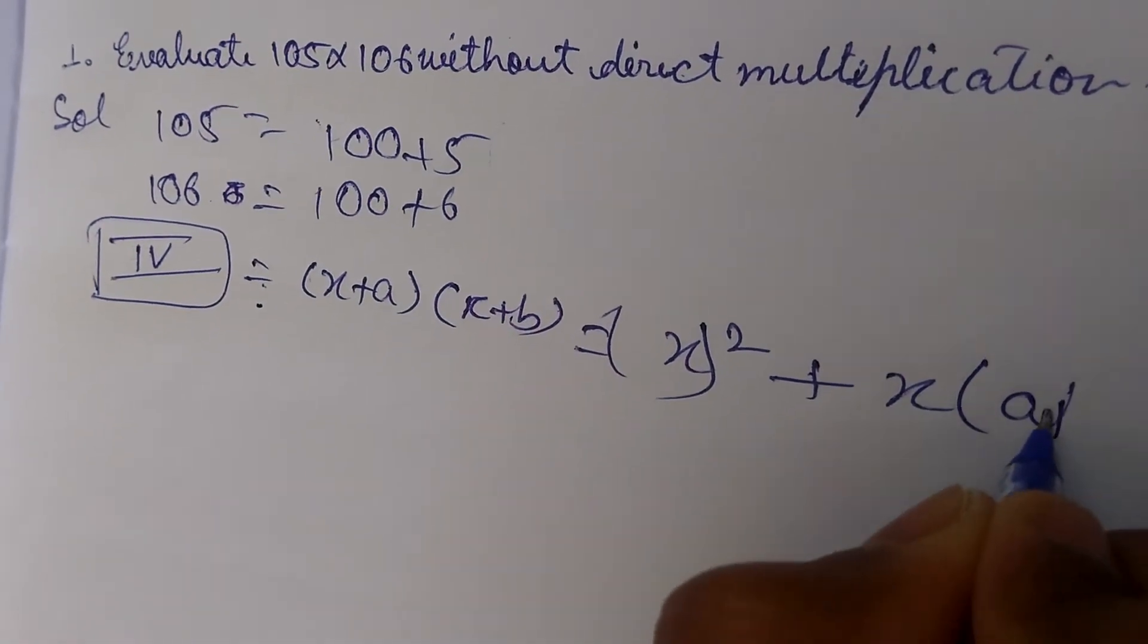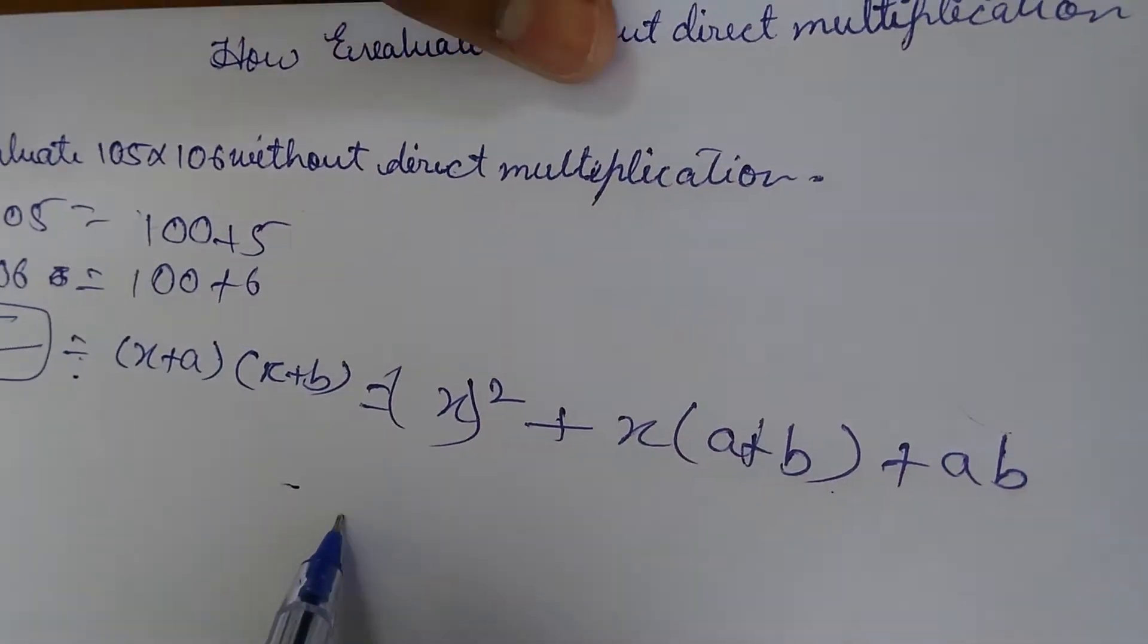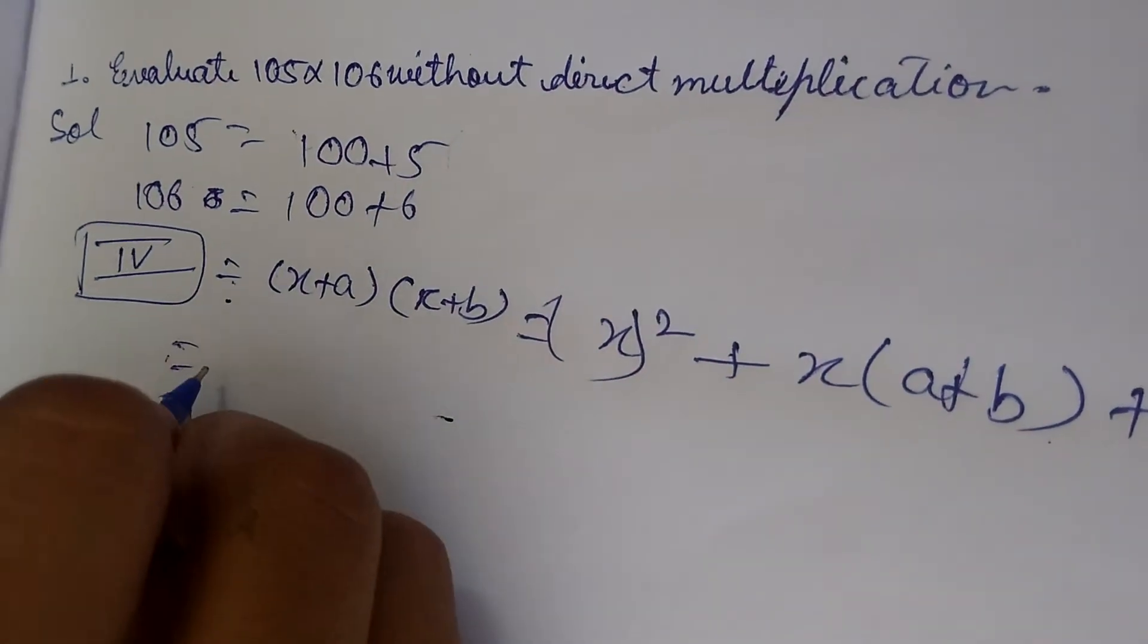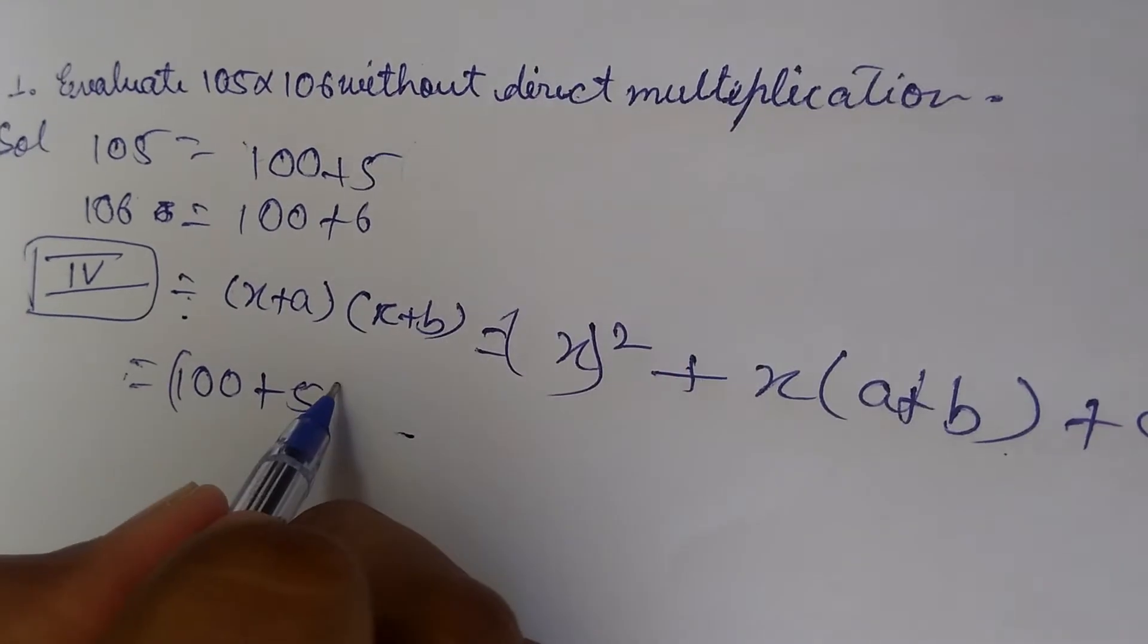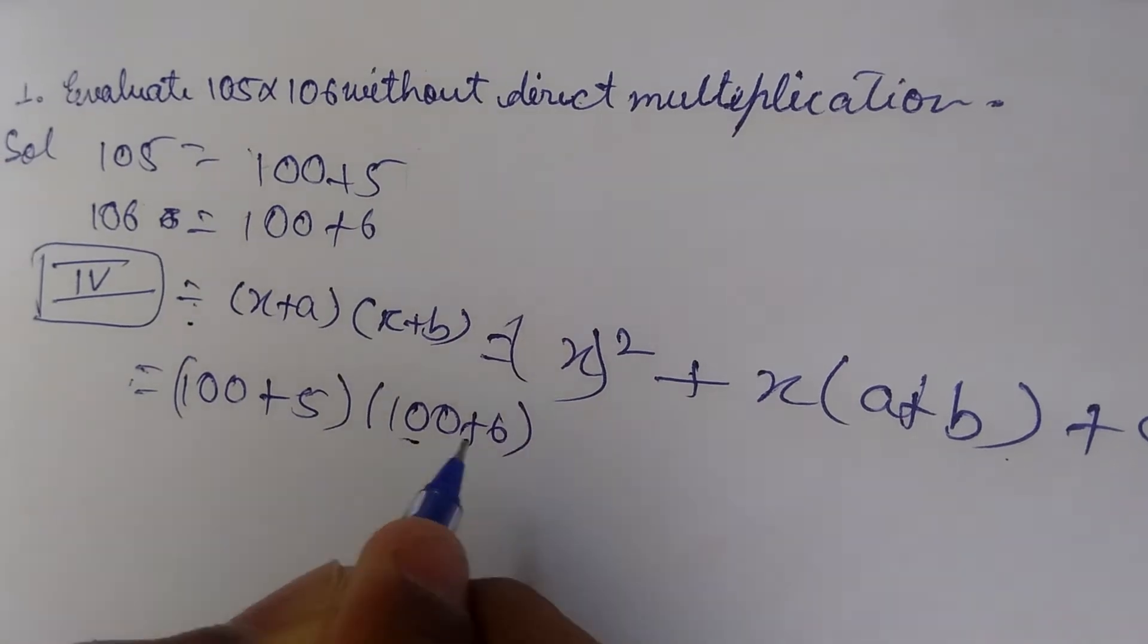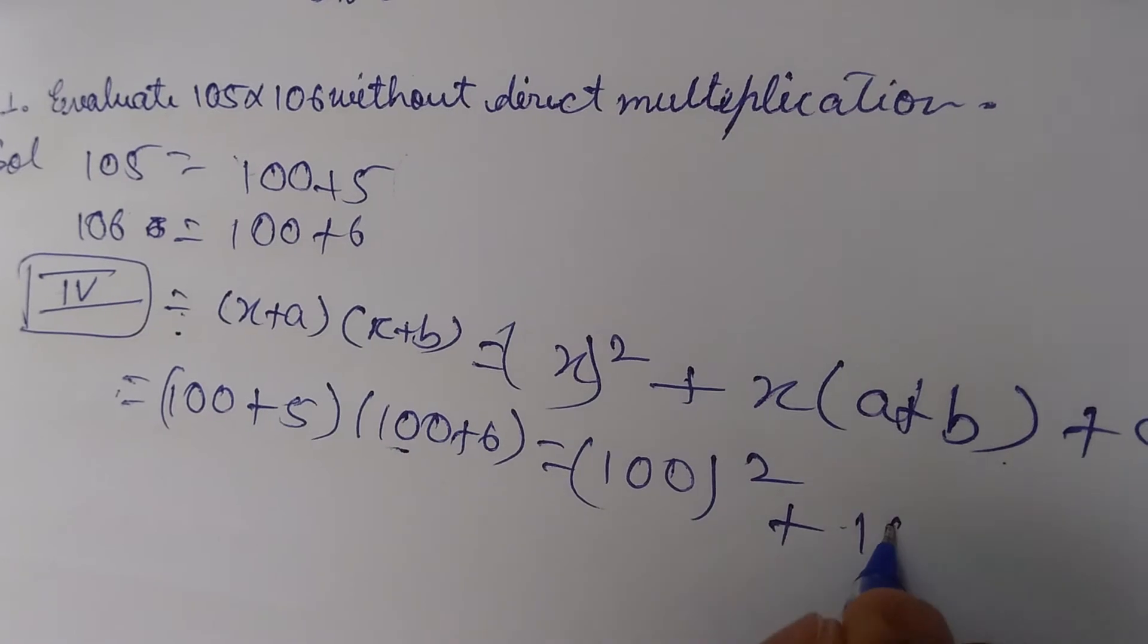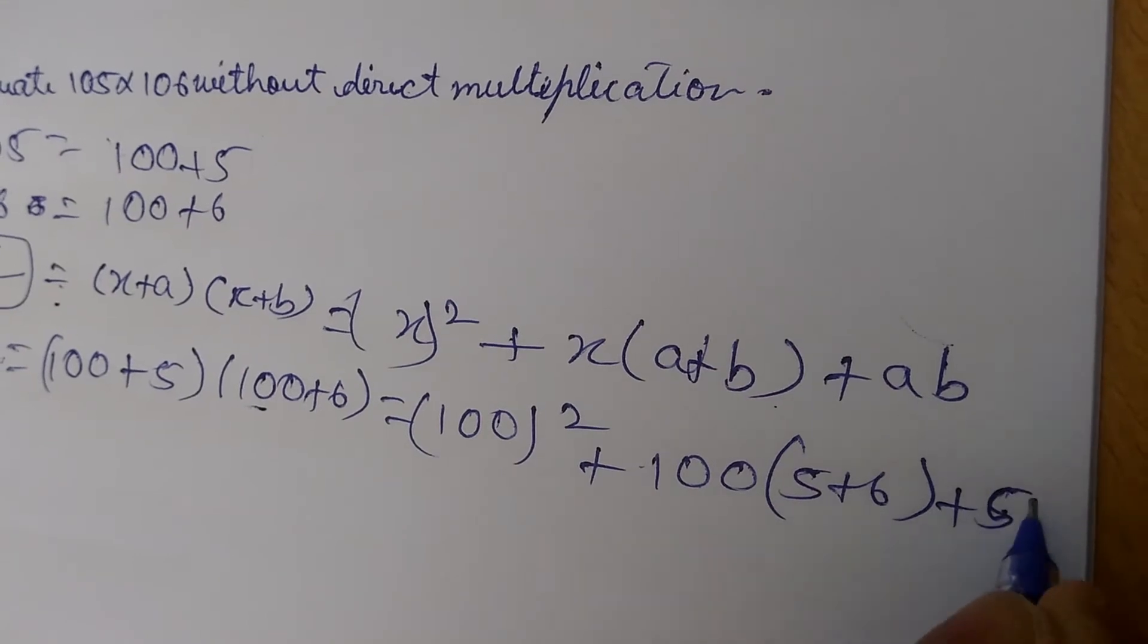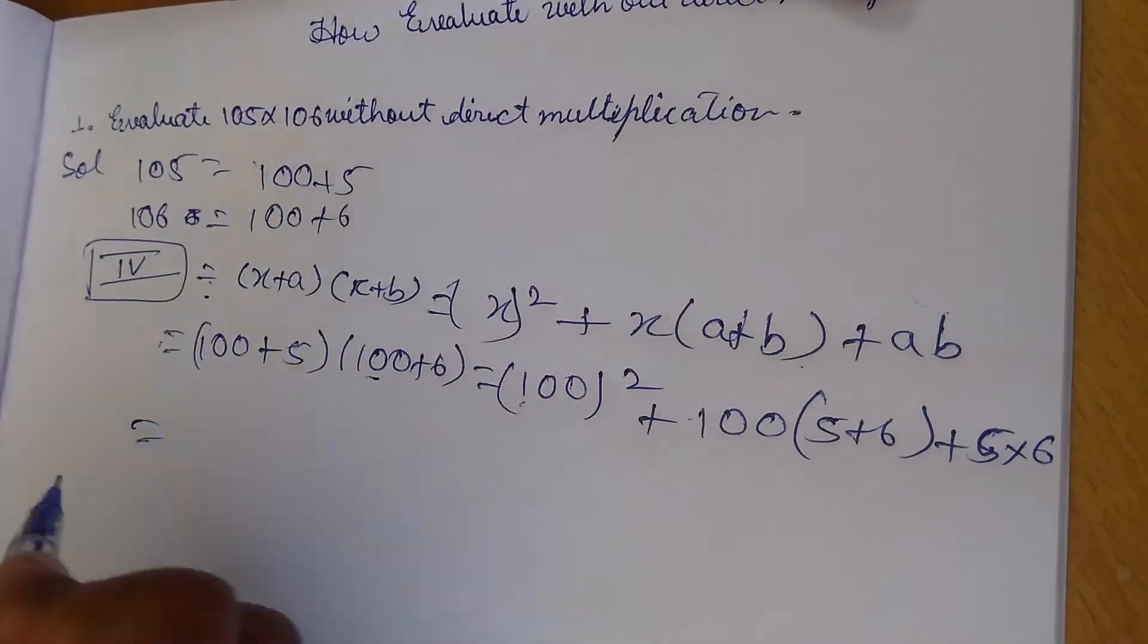Here x is 100, as it is common in both. So 100 plus 5 - I'm taking 5 as a - and 100 plus 6. This equals 100 whole square plus x is 100 and bracket (5 plus 6) plus 5 into 6.